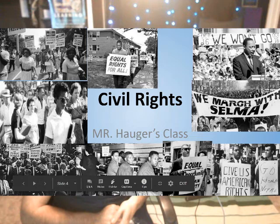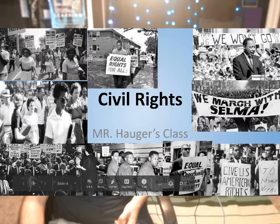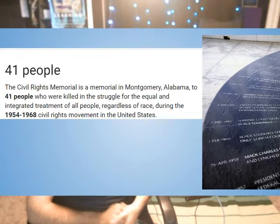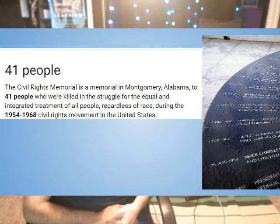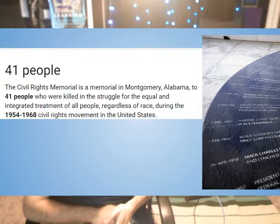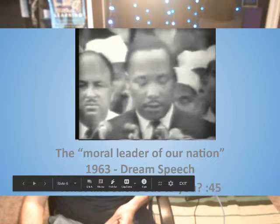There are a number of things we're going to talk about in this unit, with so many memorable people and moments across the United States. I always like to start with fast facts: 41 people — this is the number on the Civil Rights Memorial in Montgomery, Alabama — who were killed in the struggle for equal and integrated treatment of all people, regardless of race, from 1954 to 1968. That is just the people on record who were specifically noted, and their accomplishments are listed on that memorial in Montgomery.